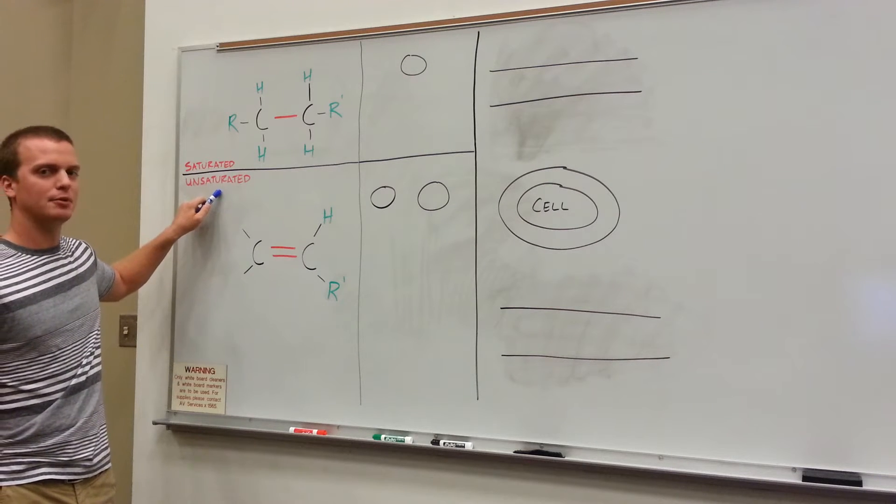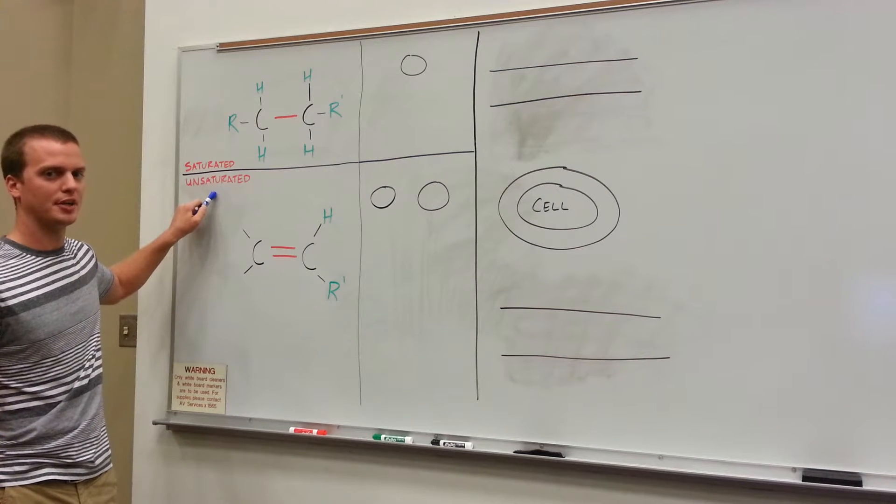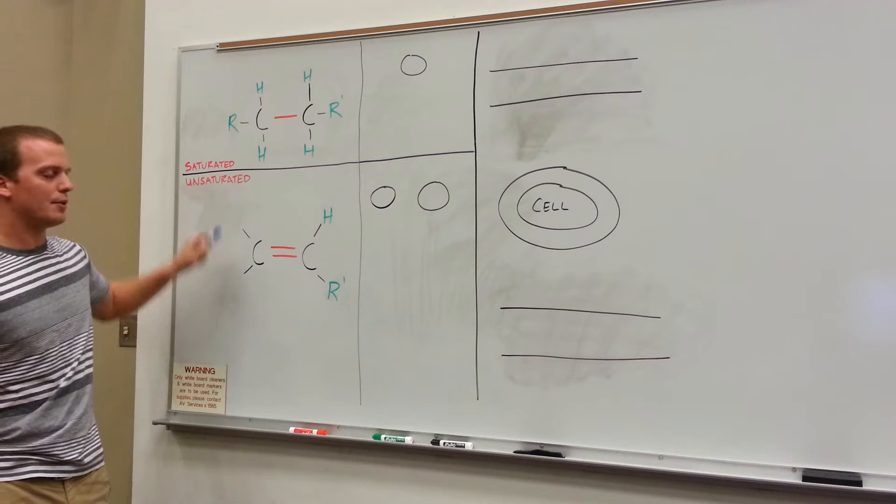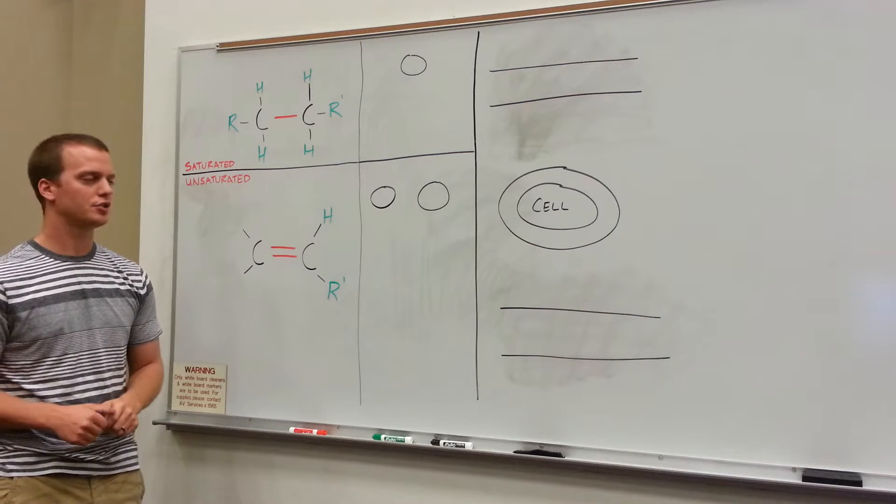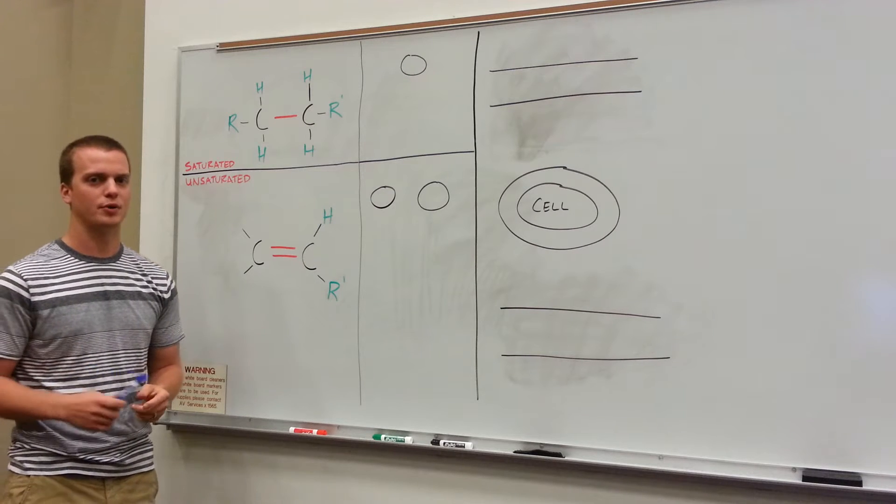You might see this on the back of the label of a can of food and they might say things like polyunsaturated or monounsaturated. We're going to be talking about the broad categories of saturated and unsaturated fats. We'll also go into trans fats and cis fats if you've heard of those. Trans fats are the really bad ones you've probably heard about and you want to avoid. We'll talk about what those are and why you want to avoid them.